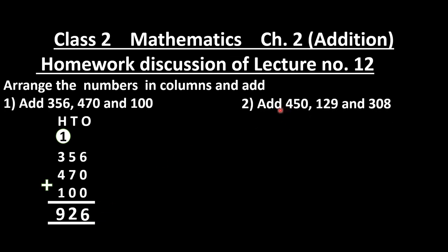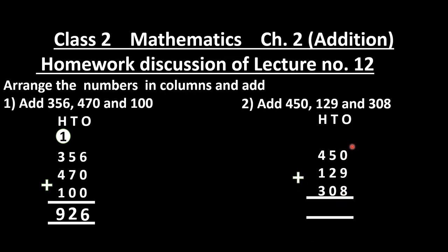Question 2: add 450, 129 and 308. Write ones, tens, hundreds places. At ones: 9 plus 8 — count: 10, 11, 12, 13, 14, 15, 16, 17 — write 7, carry 1. At tens: 5 plus 2 gives 7, plus carry 1 is 8. At hundreds: 4 plus 1 is 5, plus 3 — count: 6, 7, 8 — write 8. Our answer is 887.